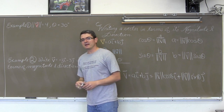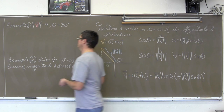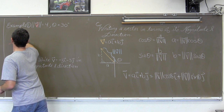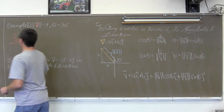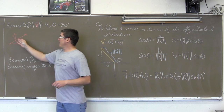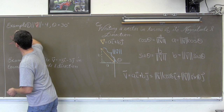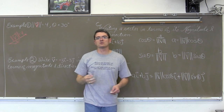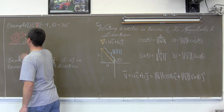Our example: vector v has a magnitude of 4 and a direction of 30 degrees. Let's sketch this out — there is vector v and there is a direction of 30 degrees. The magnitude of v is equal to 4. From that magnitude and direction, I want to find the horizontal and vertical components, which means I need to make a little right triangle.